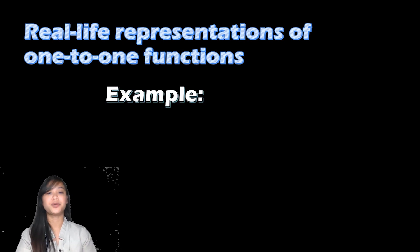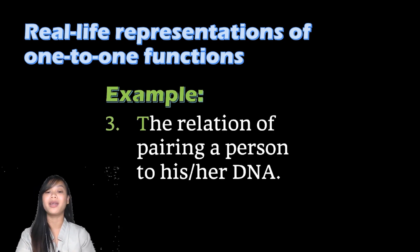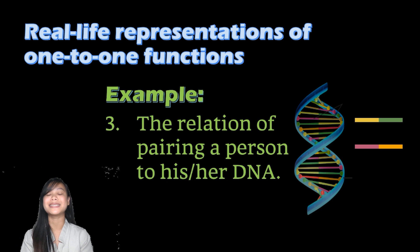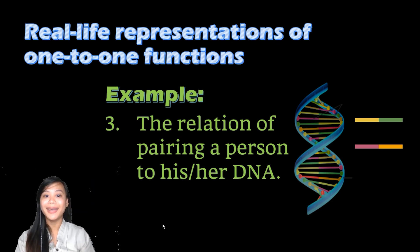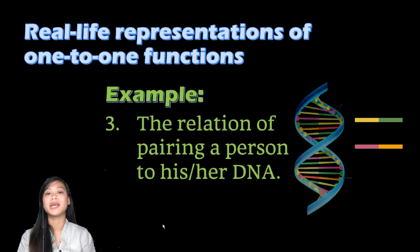The last real-life example is the relation of pairing a person to his or her DNA. Every person has their own unique DNA, and even twins or triplets still have different DNA sets.